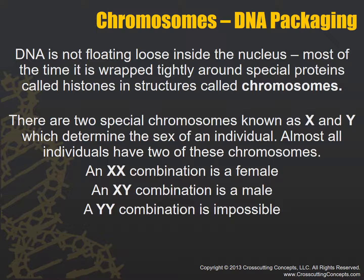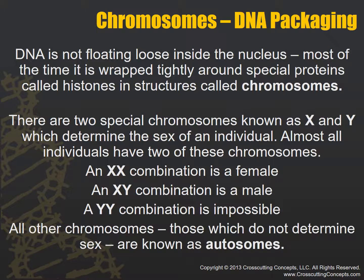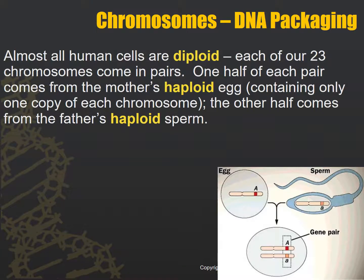There is a condition where you can have three X's, and if you do the extended biology course you'll learn about those different conditions. All other chromosomes that do not code for sex are known as autosomes. Almost all human cells are diploid — meaning two of each — so we have each of our 23 chromosomes come in pairs for a total of 46 chromosomes.